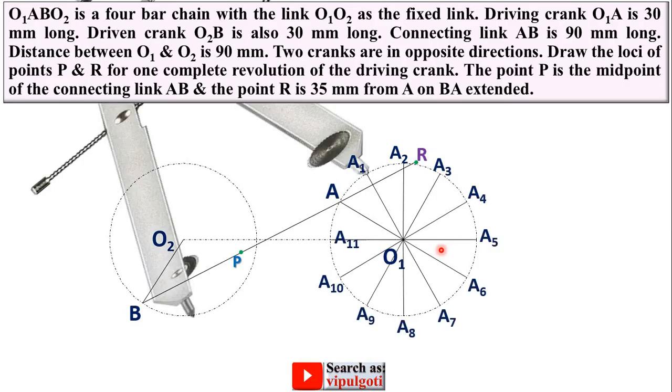Now with the help of the compass you can locate the B1 point. Because you know that A1B1 is the connecting link and the length of this connecting link is 90 mm. So set the radius of the compass as 90 mm.